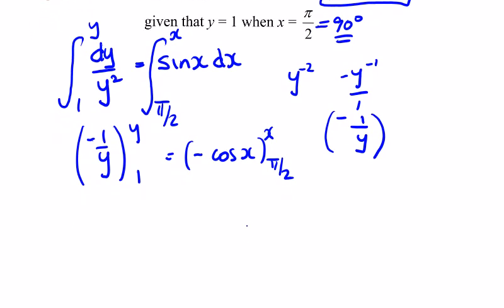So we're going to get minus 1 over y minus minus 1 over 1 equals minus cos x, putting x in, and then minus minus cos of pi over 2.